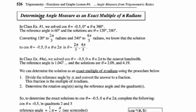We found angle measures in degrees from a trig ratio, and we found angle measures in radians from a trig ratio. The question is: can we determine an angle measure as an exact multiple of pi radians? Well, in class example one, we solved cos theta equals negative 0.5 in degrees, and we found the reference angle is 60 degrees, and the solutions were 120 degrees and 240 degrees.